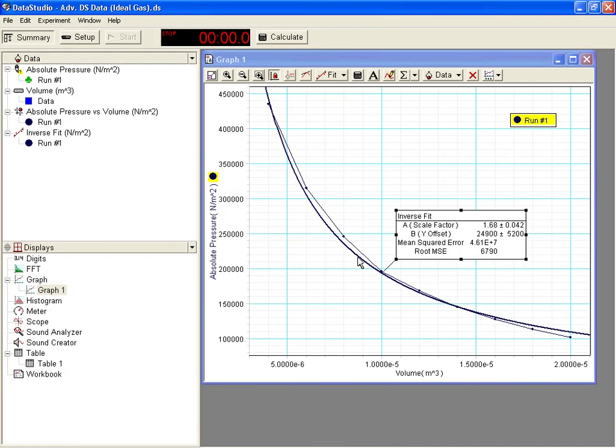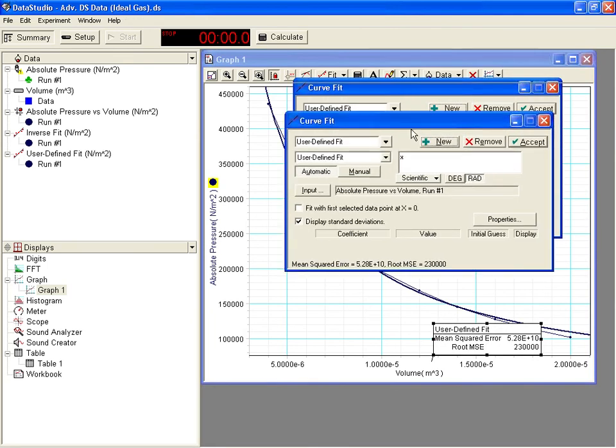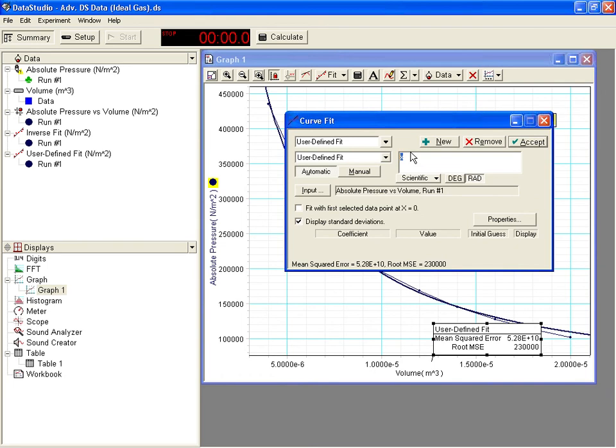There's two things we can do here. The simplest is to simply take our data and subtract that offset value that wasn't accounted for, or we can account for it in our curve fit. To do that, we're going to use a user-defined fit. Our user-defined fit is going to look just like the fit we were using just a second ago, except this time I'm going to include an offset here in our expression. Does everybody see what I did?